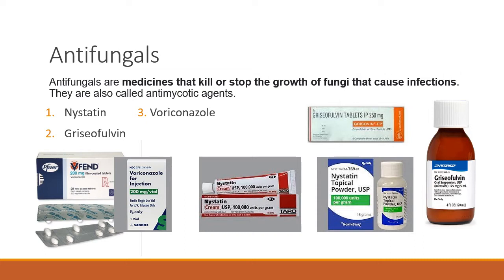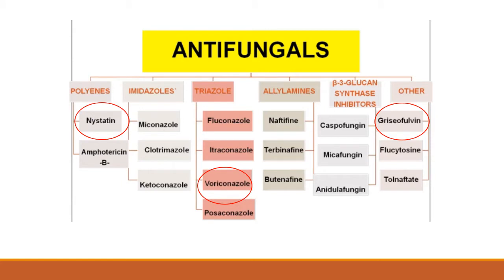Antifungals come in different formulations. Voriconazole comes in tablets and injections. Nystatin is available as topical powder, cream, and ointment. Griseofulvin is available as oral syrup and tablets. Regarding classification: nystatin is an example of polyenes, voriconazole is an example of triazoles, and griseofulvin is categorized as others.